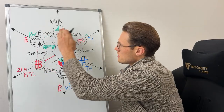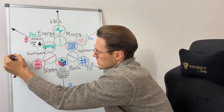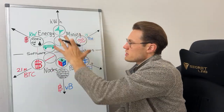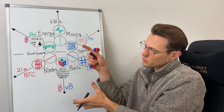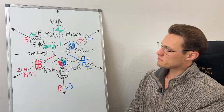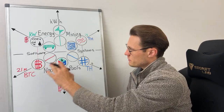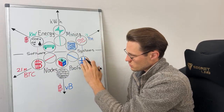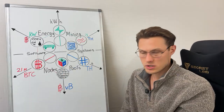You've got these three key directions on the top side, which is energy production and energy consumption, and they represent the physical world of Bitcoin. On the bottom half, you've got Bitcoin mining producing hash rate, which produces Bitcoin blocks, which is where Bitcoin comes from.